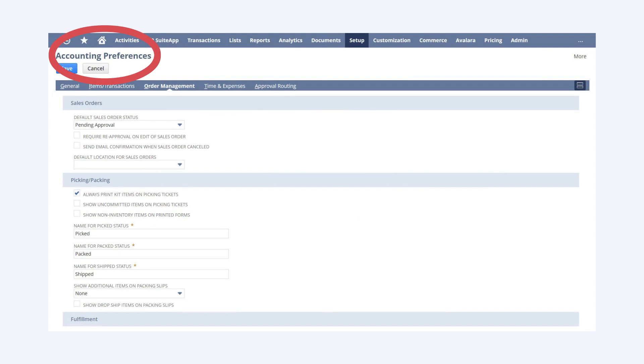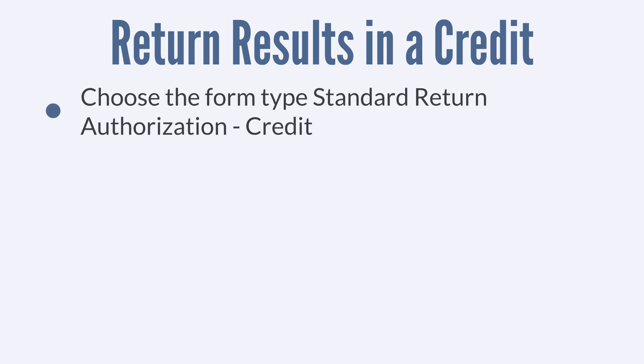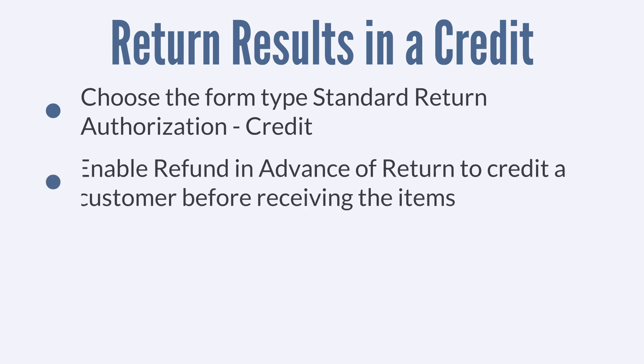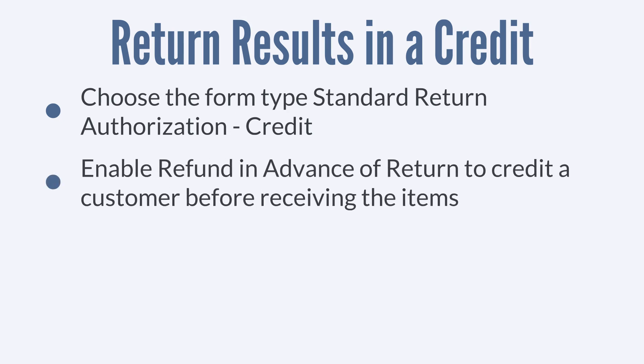Now let's take a look at return authorization forms that result in a customer credit before the refund is issued. As with cash refunds, you can also manually determine if a return will result in customer credit. Simply select the form type standard return authorization credit when you fill out the return authorization form. Also, if you want to authorize a credit before customers have returned their items, you would need to enable the refund in advance of return feature.